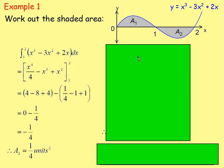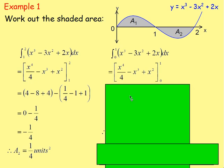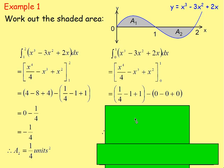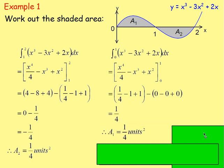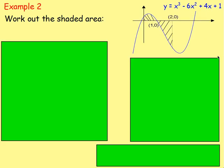Do the same thing for area 1 — integrating with limits 0 and 1, 0 being the lower limit, 1 being the upper limit. Work that out and you end up with one quarter, meaning area 1 is one quarter. How would you work out the total area? Add them. So to work out the total area, take area 1 and area 2 and add them together. One quarter plus one quarter is just one half. And if you're not given units, you just write squared units on the end.